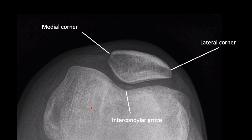This is the skyline view. The lateral corner and the medial corner, and the patella sits in the intercondylar groove. You can see how the lateral corner is more elongated and doesn't have much bulk of bone from the distal femoral condyle. Therefore, a lateral patella dislocation is more likely to happen than a medial patella dislocation.